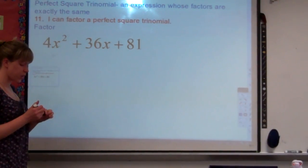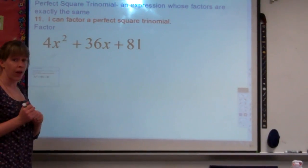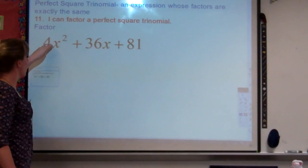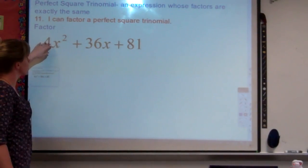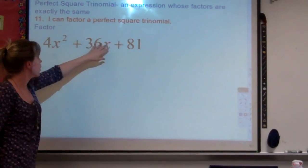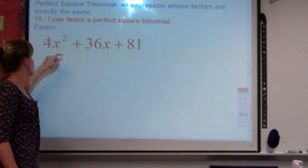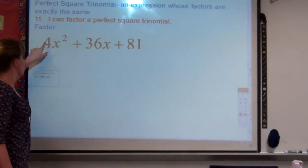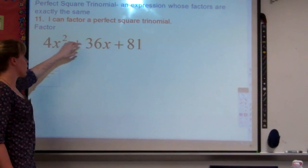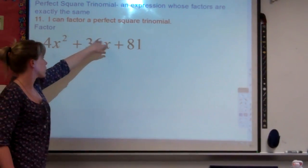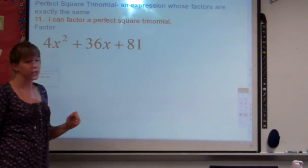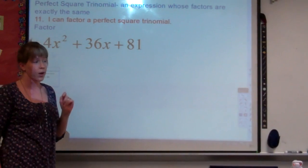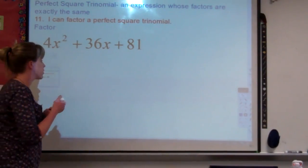The first thing that I do when I factor is I look for a common factor that goes into all three numbers. Is there a number that goes into 4, 36, and 81? In this case, there's not, so we can proceed directly to the box.